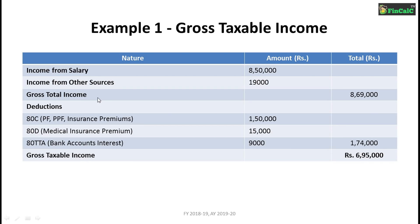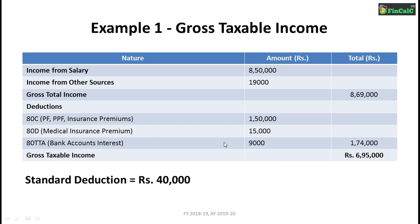These deductions are subtracted from your gross total income earned in that financial year. So the gross taxable income is the difference of total income and deductions, which comes to ₹6,95,000. A new component introduced in Budget 2018 is a standard deduction of ₹40,000, applicable only to salaried employees and pensioners. This deduction is applied to the gross taxable income and will reduce your tax liability.